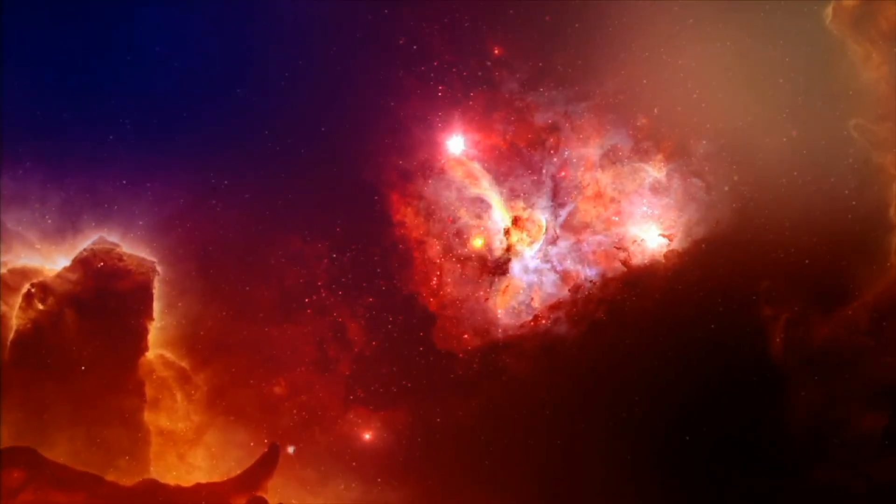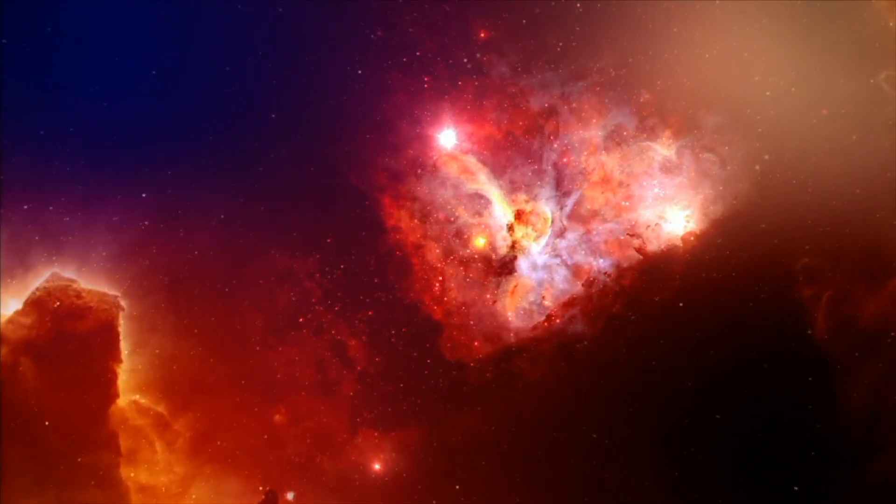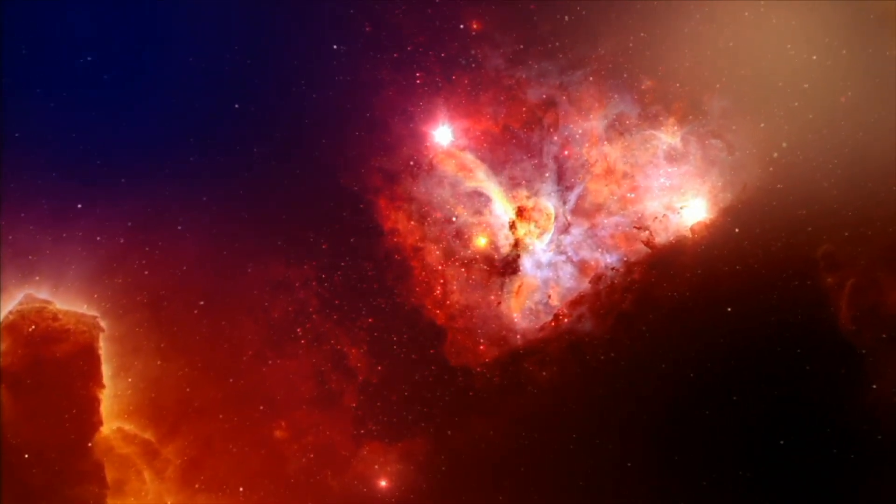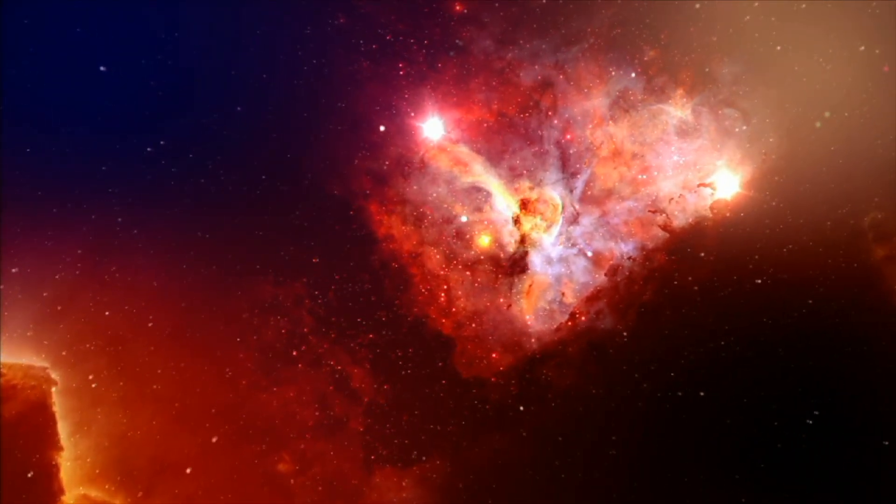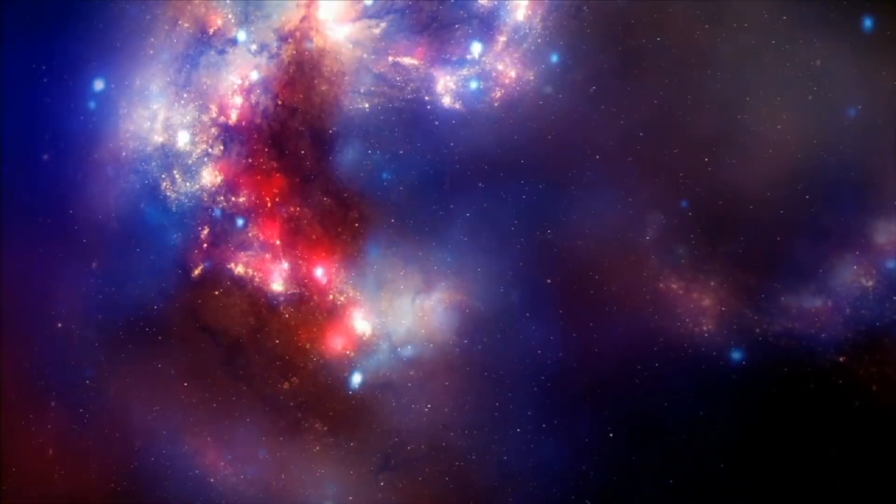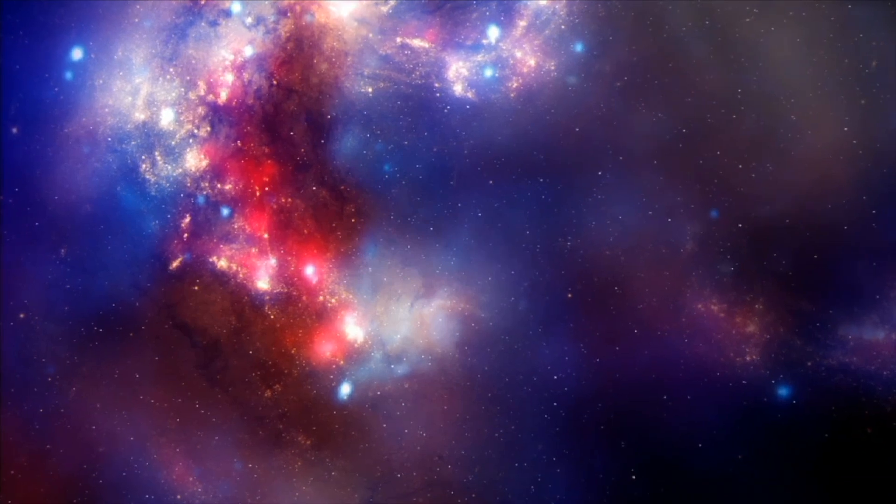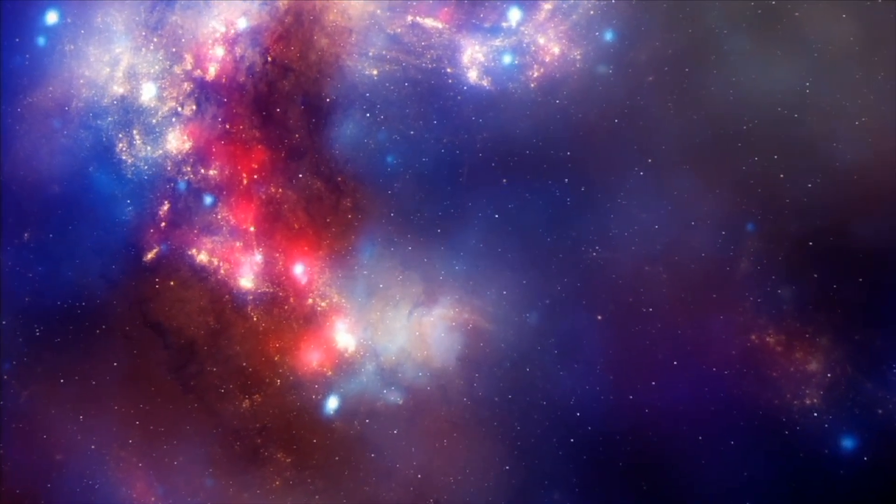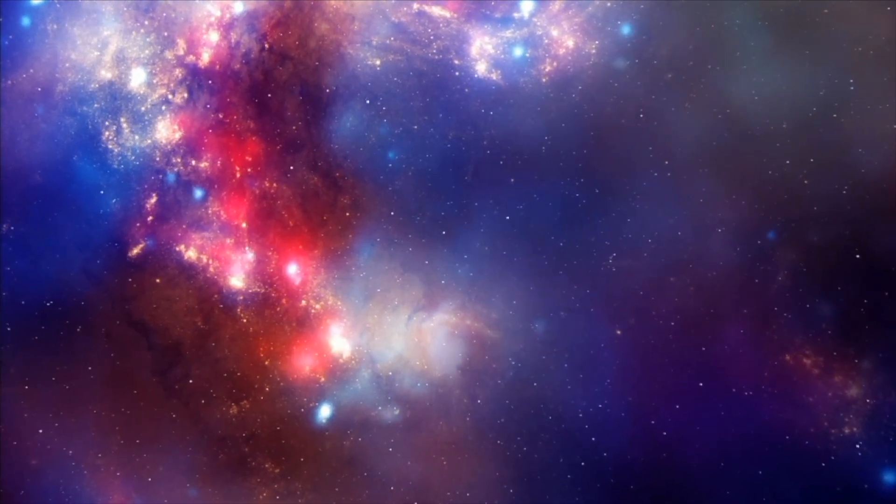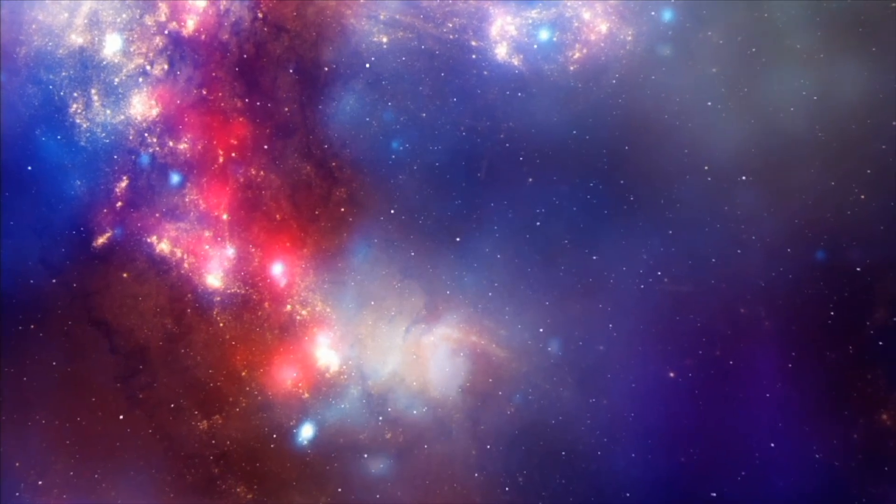Finally, irregular galaxies have no particular shape. They are among the smallest galaxies and are full of gas and dust. These galaxies have a lot of star formation because of the large amount of gas and dust. This can make them very bright. About twenty percent of all galaxies are irregular.